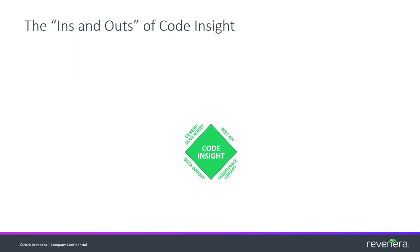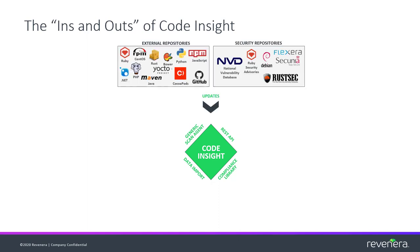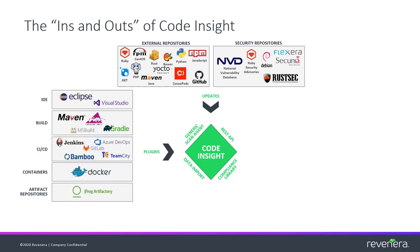Now let's take a minute to talk about the data that goes into Code Insight and what comes out the other end. We have collectors that are gathering data from multiple repositories such as Maven, NPM, and GitHub. From these sites, we're gathering information about open source packages such as versions, license details, and other related metadata about the component. We are also always pulling data from multiple security-based repositories such as the NVD, RubySec, and Debian advisories that we merge with our collected component data. All this data is stored within Code Insight to allow us to provide information about the open source components within a project's inventory.